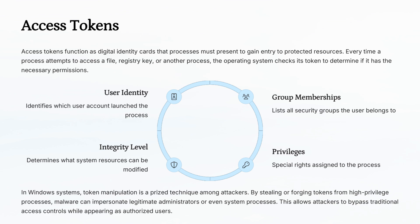Think of an access token as a digital ID card for a process. It tells the operating system what a process can and can't do, like a hall pass in school. Attackers try to steal or forge tokens to sneak past security controls and act like legitimate system processes. Understanding tokens is crucial for defending against privilege escalation.